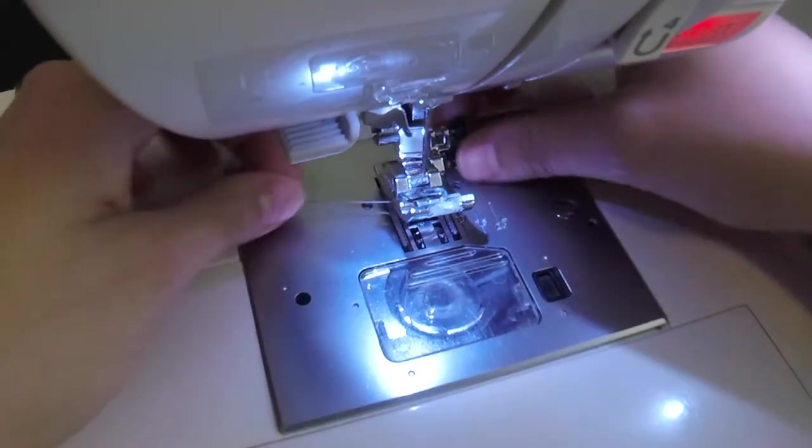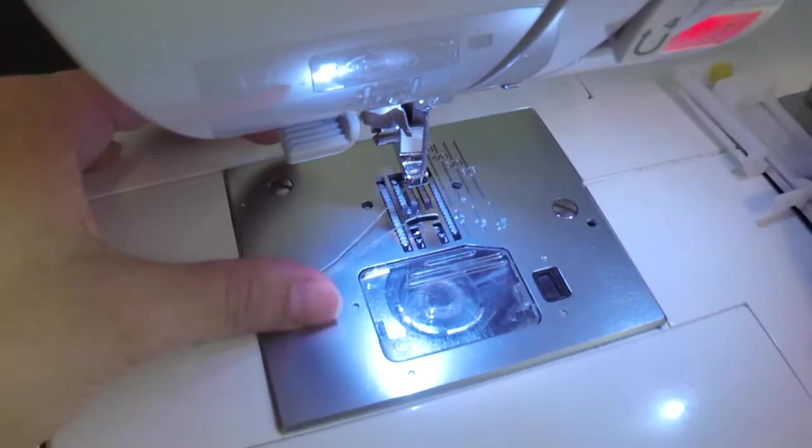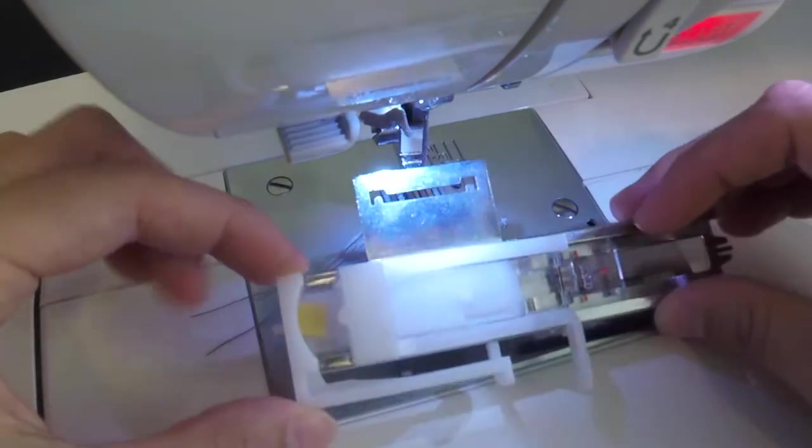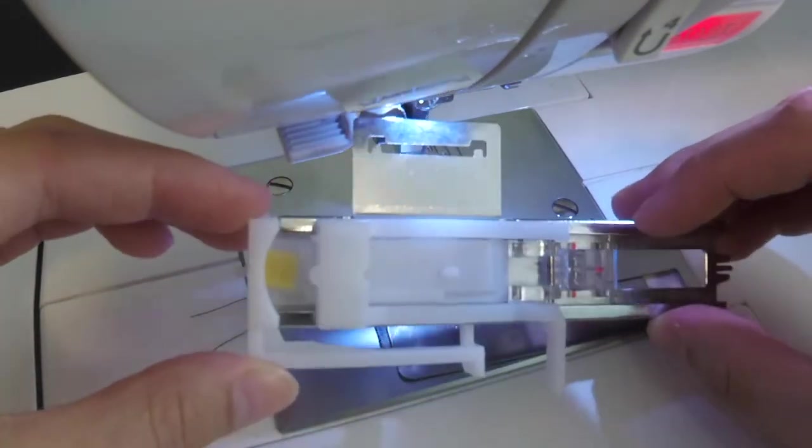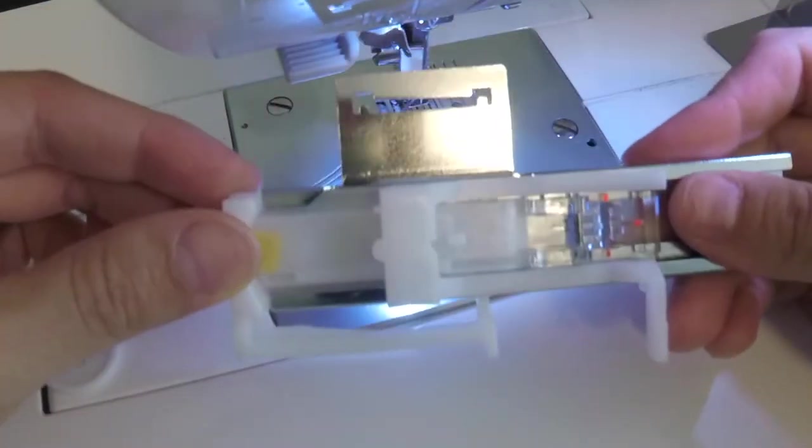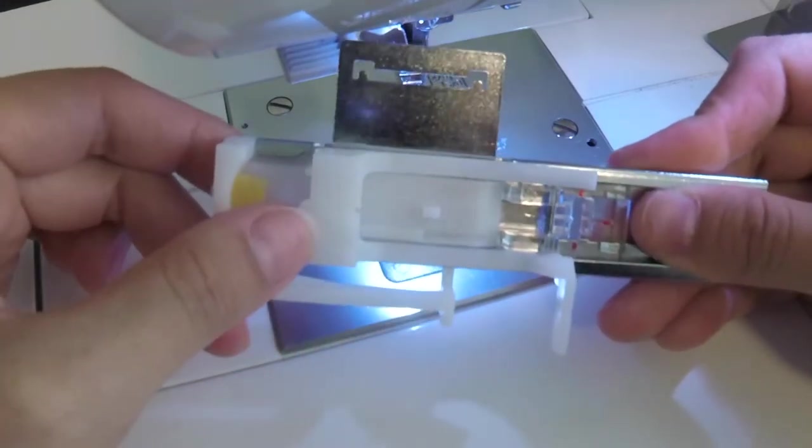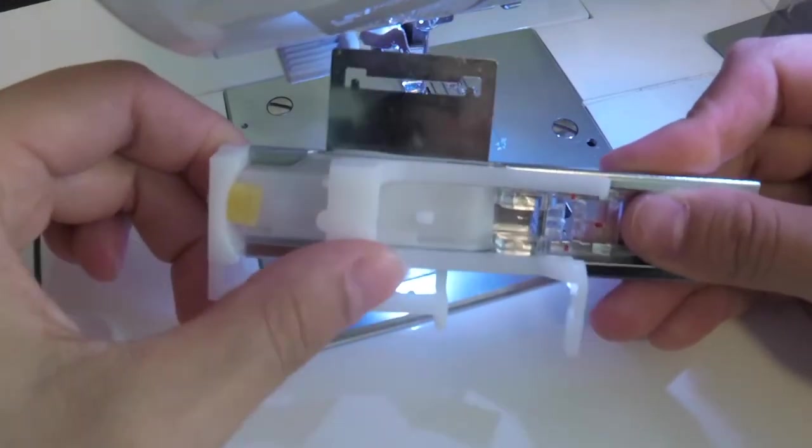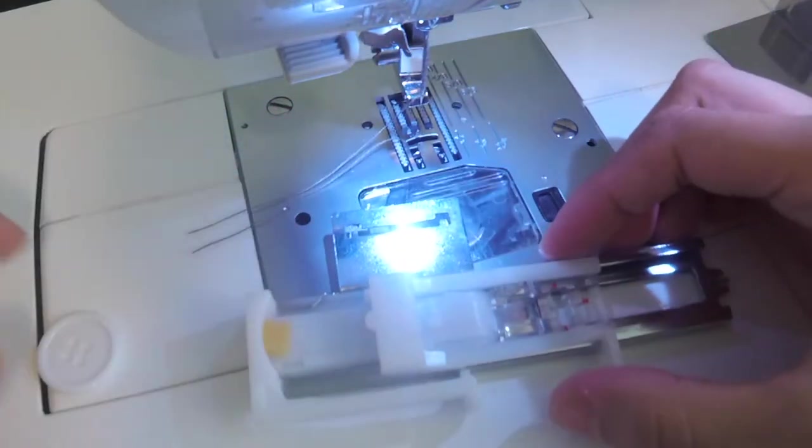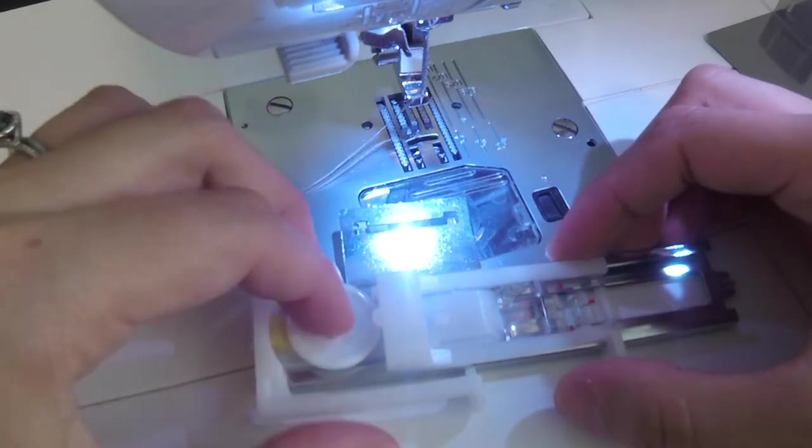Going to my machine, I'm first going to take off my regular presser foot and switch this out with my buttonhole foot. Mine specifically looks like this and it's got two pieces. For now, the top piece is what we're going to look at. You can see there's this little slider area here and this is going to help size out our button so our machine knows how big to make the buttonhole.